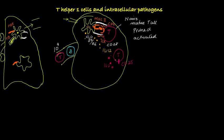Once IL-2 begins binding to CD25, the T cells will proliferate very rapidly and we will have a huge number of T cell clones specific against the TB pathogen. This step is termed clonal expansion. These T cells, when they interact with IL-12, will be differentiated into TH1 cells.